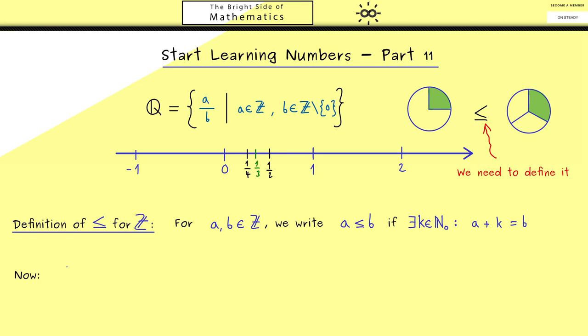OK, now we can use this to define that one quarter is indeed less or equal than one third. This should hold because 3 is less or equal than 4. Please note here we have the ordering for the integers, and here we have the new ordering for rational numbers.